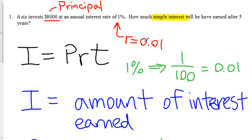Now the question says how much simple interest will he have earned. So we're looking at I. This is the interest.